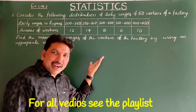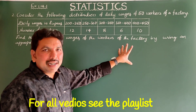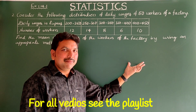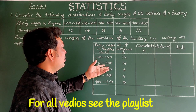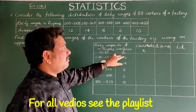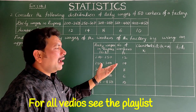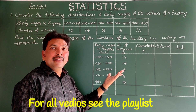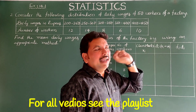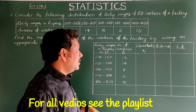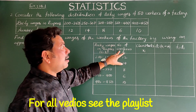To find the mean, I'll first draw the table. I am applying the assumed mean method, so the columns are: class intervals, fi (number of workers), xi (class marks), di, and fi·di.